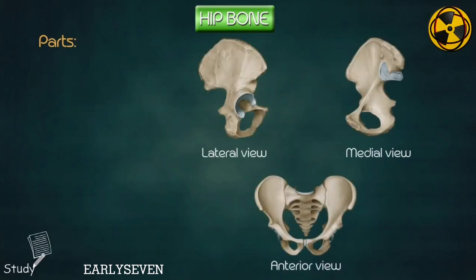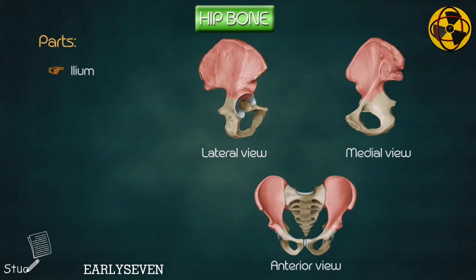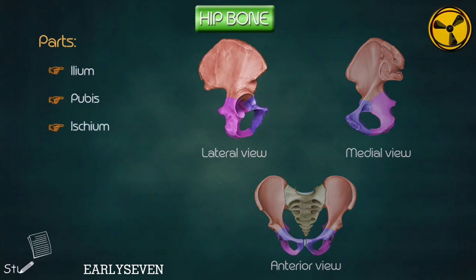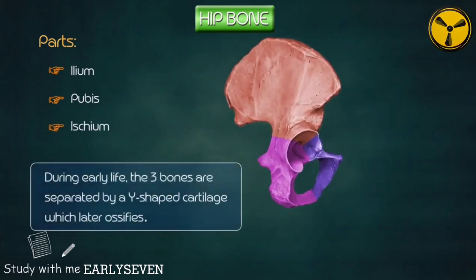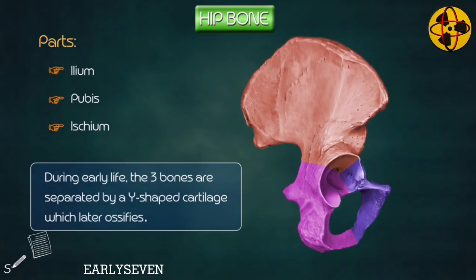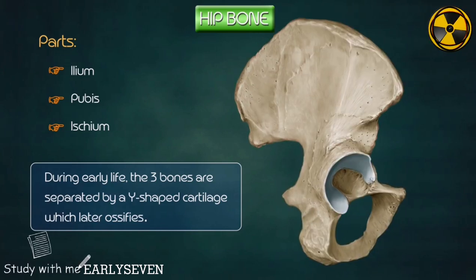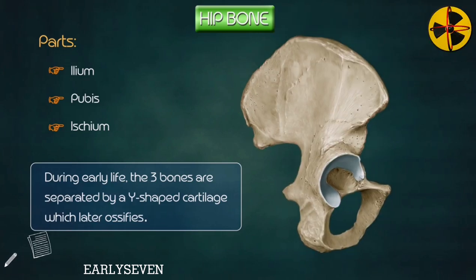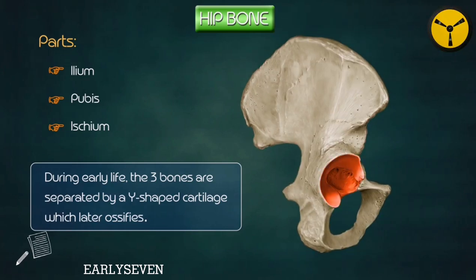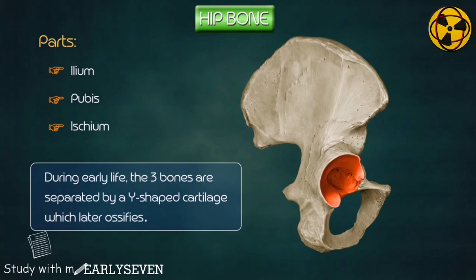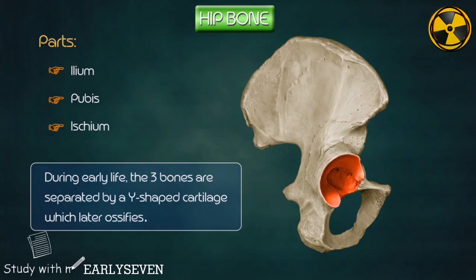It has three separate parts: ilium, pubis, and ischium. During early life, the three bones are separated by a Y-shaped cartilage which later ossifies, the place of union being in the walls of the acetabular cavity.